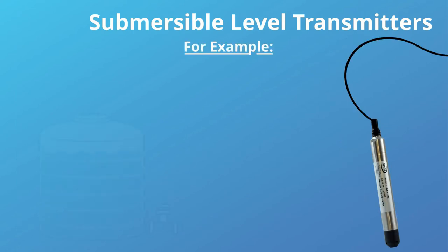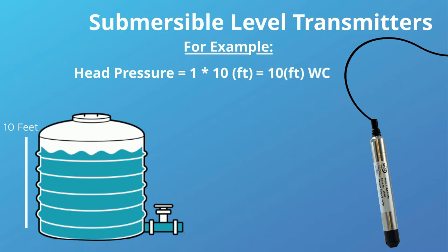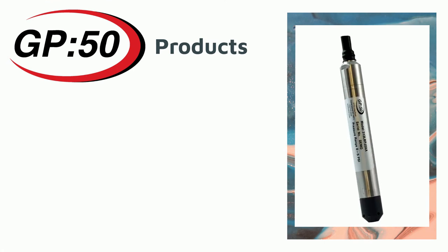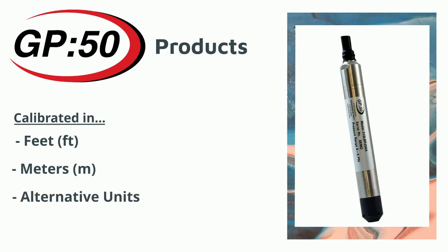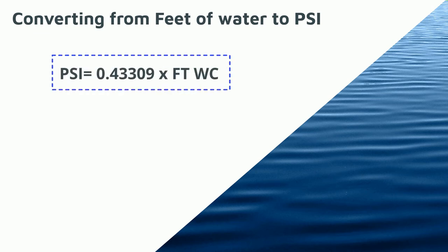For example, if we have a tank that is 10 feet tall and is filled with water, using the formula of head pressure equaling 1 times 10 feet, the water column is a hydrostatic depth pressure of 10 feet of water column. GP50 can provide a level transmitter calibrated in feet of water, meters of water, or any other alternative engineering unit, or we can provide units calibrated in pressure such as psi or bar. To convert from feet of water to psi, we use the formula: psi is equal to 0.433 times feet of water column.